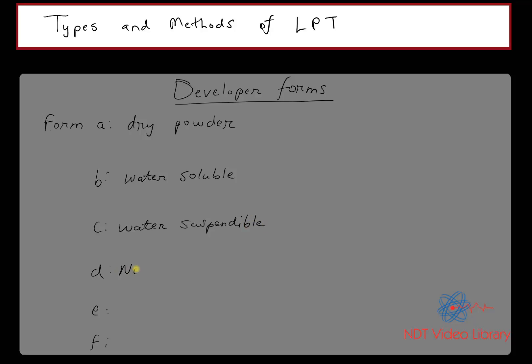Form D is non-aqueous - non-aqueous is no water - Type 1. What's Type 1? Type 1 is fluorescent.